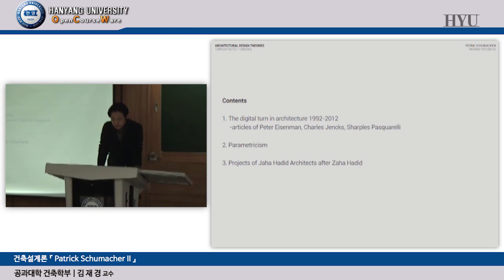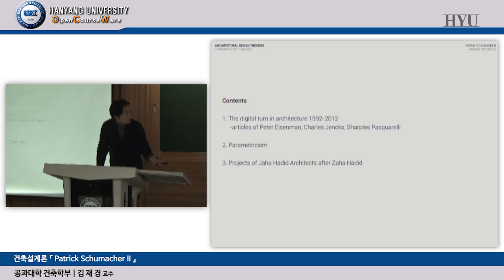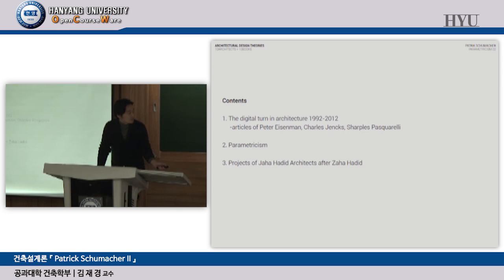The first part is a brief history of digitalization in architecture from the early 19th century to the current stage, especially through articles by Eisenman and Charles Jencks — a British historian and the first to define postmodernism, also the principal of SHoP Architects in America. Second, parametricism — not only Zaha's work but also today's tendency and recent work.